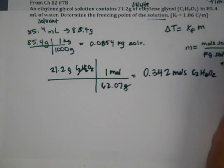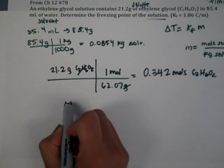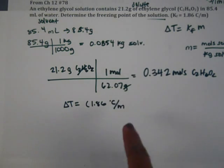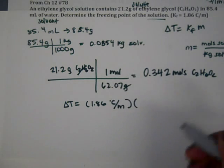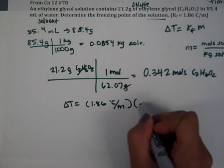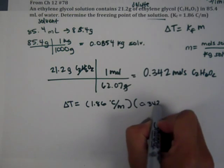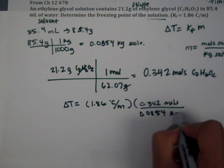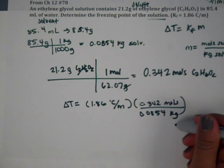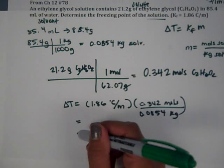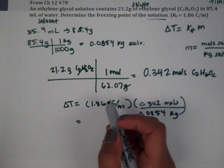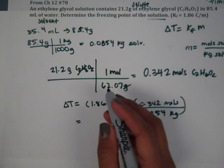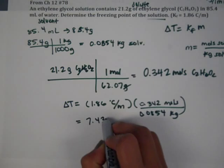Now we can plug this into the formula. We can find molality. So our delta T is going to be KF, 1.86 degrees Celsius per molal unit, times the molality of moles per kilogram: 0.342 moles over 0.0854 kilograms. That's molality. Now we solve that out and we get roughly 7.43 degrees Celsius.